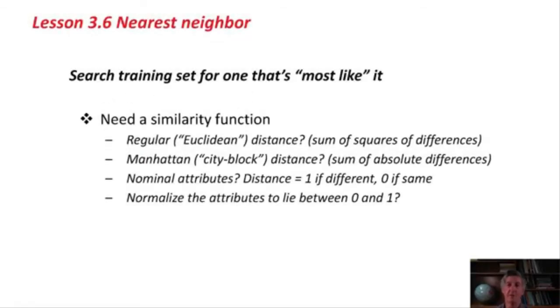The trick, of course, is what do we mean by most like? We need a similarity function, and conventionally people use the regular distance function, the Euclidean distance, which is the sum of the squares of the differences between the attributes. It's the square root of the sum of the squares, but since we're just comparing two distances, we don't need to take the square root. You might use what's called the Manhattan or city block distance, which is the sum of the absolute differences between the attribute values.